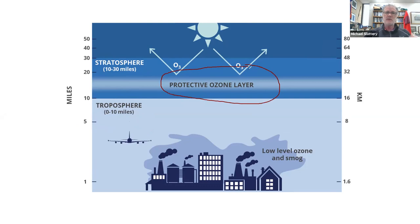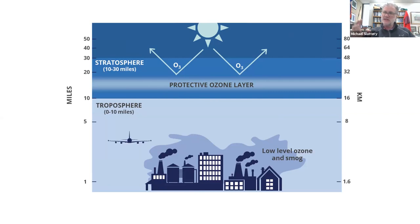Moving up to the stratosphere — we're in the 10 to 15 mile range, or the 20 to 25 kilometer range — this is stratospheric ozone, and it performs a very different function. Both are chemically identical; they're both O3. There's nothing magically different about O3 in the stratosphere versus the troposphere other than they perform different functions and are formed and destroyed in different ways.